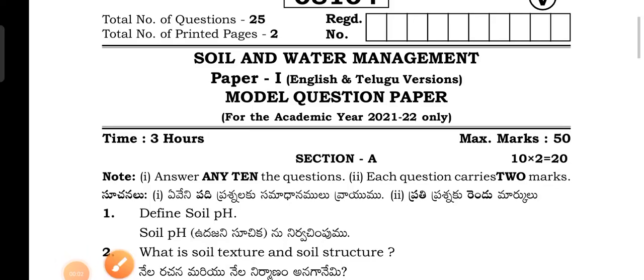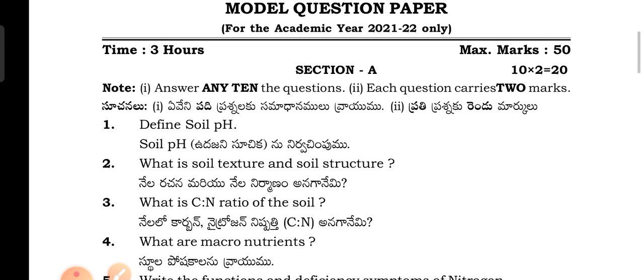Hey students, welcome back to my channel. Today I would like to show the model question paper for the Agriculture Crop Production ACP course for the first years, Paper 2 - Soil and Water Management - for Telangana students. This same syllabus is applicable for both Andhra Pradesh and Telangana students, but this question paper is prepared by the TSBI, Telangana State Board of Intermediate.